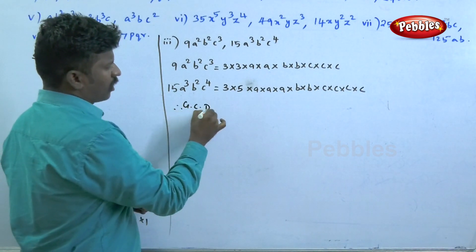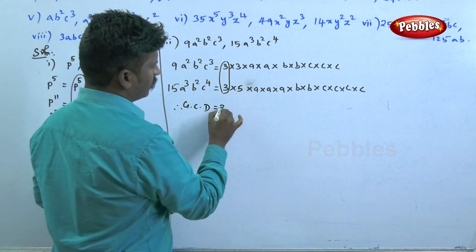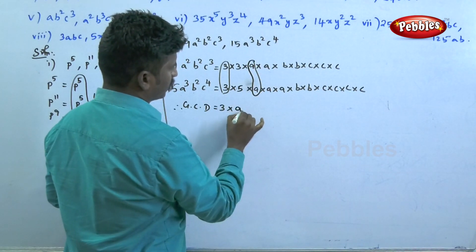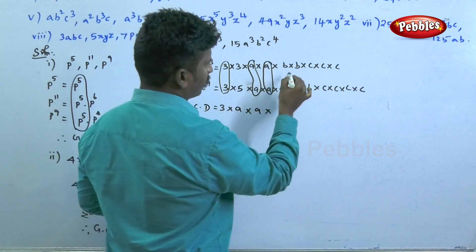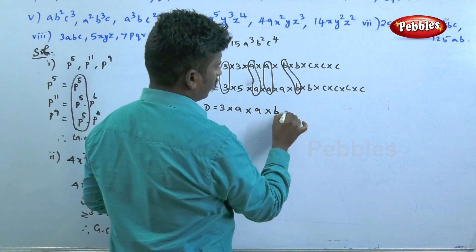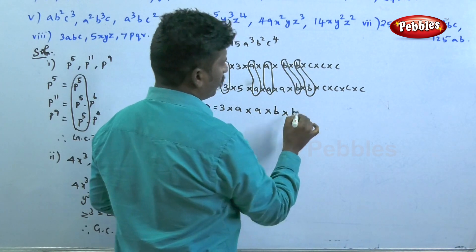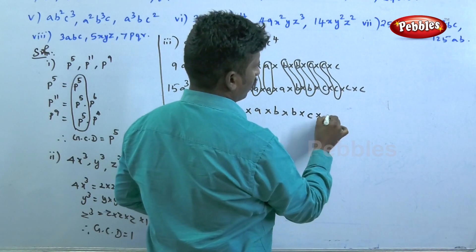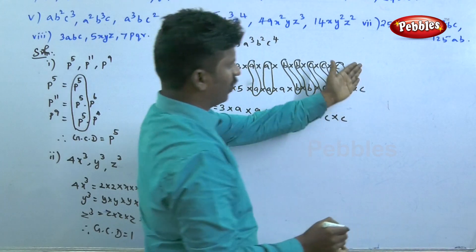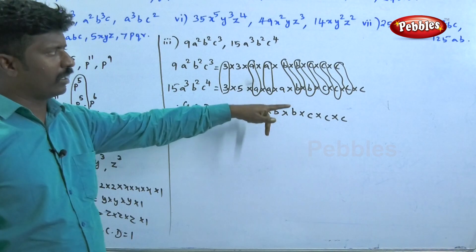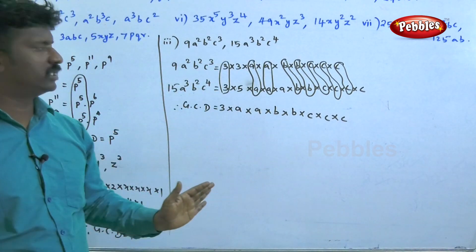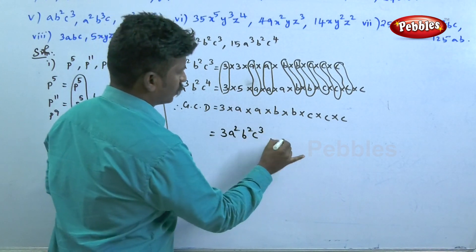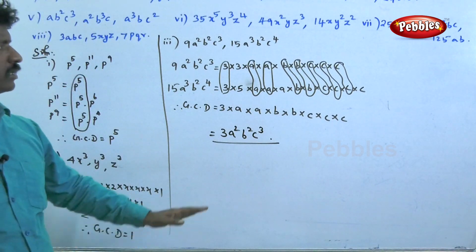Now for the GCD: the common factor in the numbers is 3. Comparing the variable a: a² is common. For b: b² is common in both. For c: c³ is common. So the GCD is 3 × a² × b² × c³, which gives us 3a²b²c³.